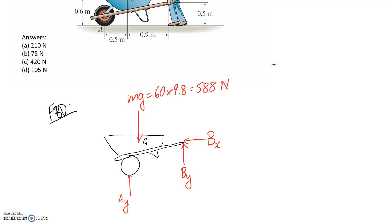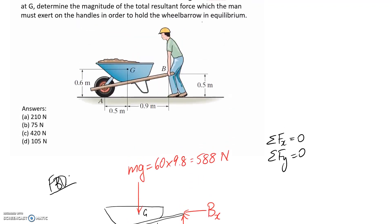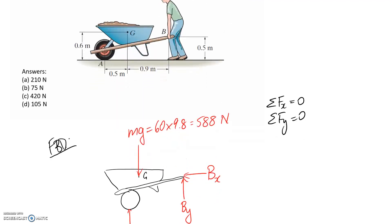So we have our three equilibrium equations. Sum of forces has to be zero in both the x and y directions for it to be in equilibrium, which is exactly what it's asking us to calculate. And the other equation we have is that the moments about any point have to be zero as well.